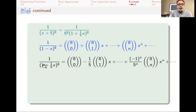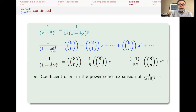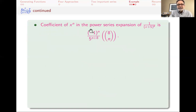Substituting minus x/5 for x, 1/(1-x)^8 becomes 1/(1+x/5)^8. On the right-hand side, the typical term becomes (-1)^n / 5^n · (8 multi-choose n) · x^n. Then multiplying by 1/5^8, the coefficient of x^n in the power series expansion of 1/(x+5)^8 is (-1)^n / 5^(n+8) times (8 multi-choose n).